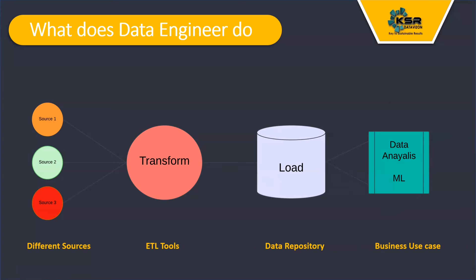This data comes from various sources. Data analysts can't directly go to the sources and extract the data. For example, sales data might be in source two and product data in source one — it's not feasible for the analyst team to go to each source manually. So what we do is build one centralized data repository where we extract data from all sources, transform it into a workable format, and load it. Then we can work on reports or machine learning models — this is the ETL work done by data engineers.